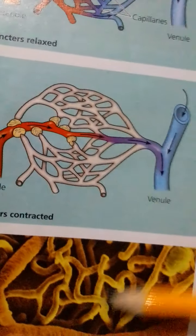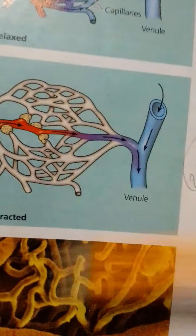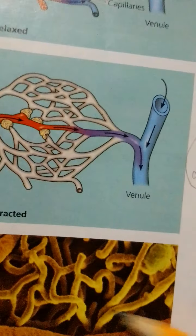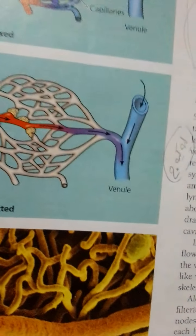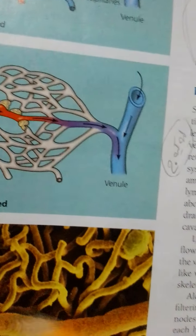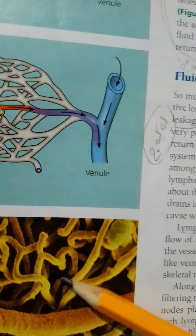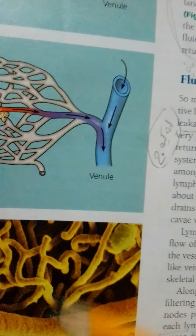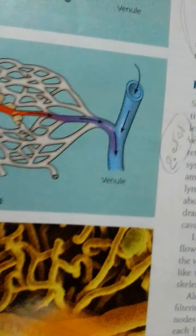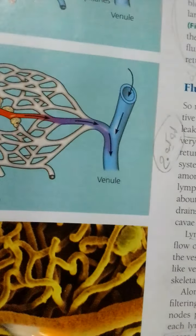Notice the blood flow in capillary beds. Pre-capillary sphincters regulate the passage of blood into capillary beds. Some blood flows directly from arterioles to venules through capillaries called thoroughfare channels, which are always open.